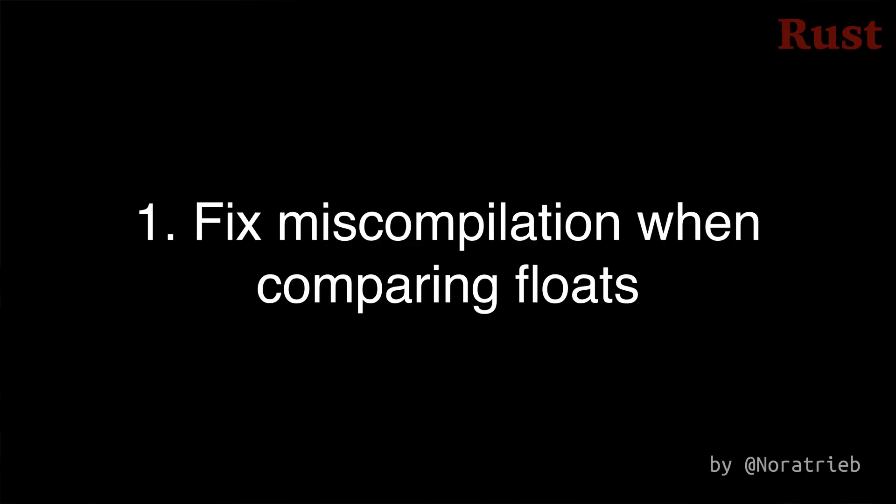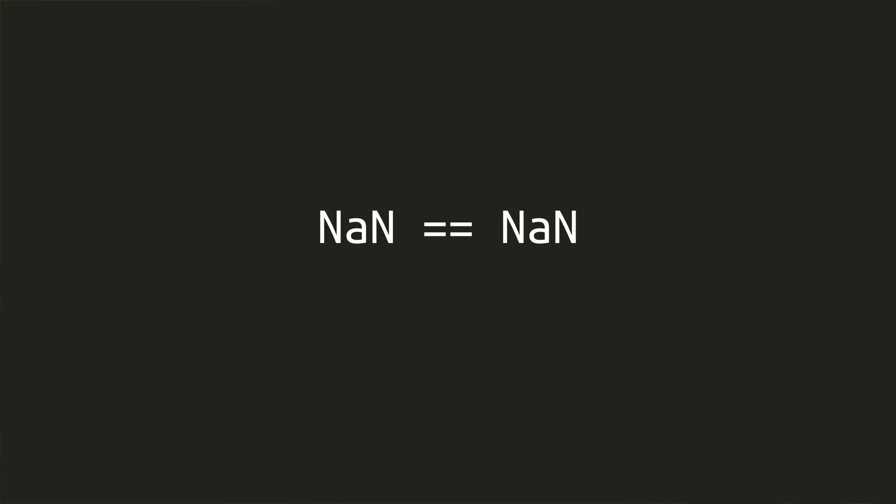Let's cover Rust 1.80.1, which was released August 8th, 2024, to fix two regressions. Change 1 fixes a bug that could occur in Rust versions 1.78 to 1.80, where an optimization caused the floating point value NaN (not a number) to be equal to NaN, and 0.0 to not be equal to negative 0.0.